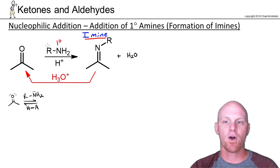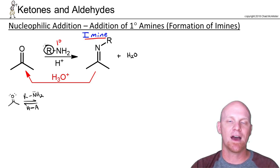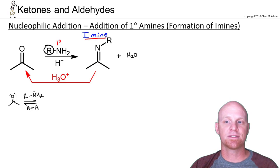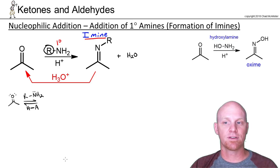One thing to note here is that this R group right here can be just about anything. So if it's hydrogen or a carbon chain, that's formally when you get an imine. But if it were like an OH and we used hydroxylamine instead of a primary amine, we'd get an oxime instead.